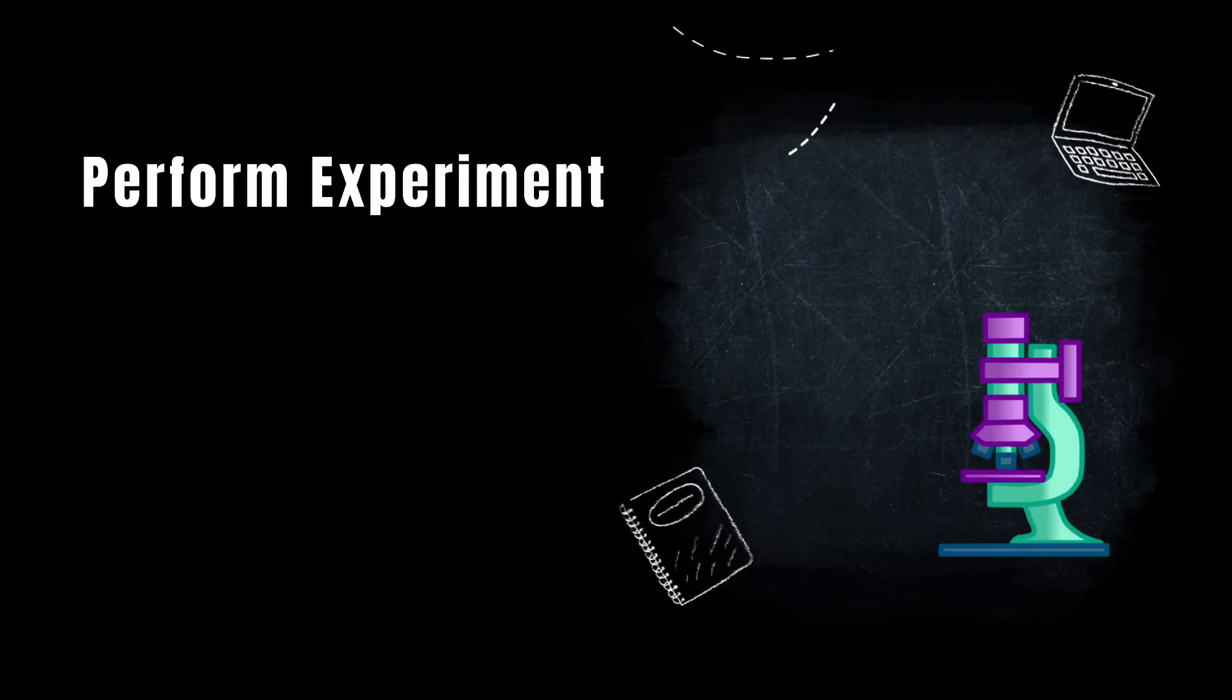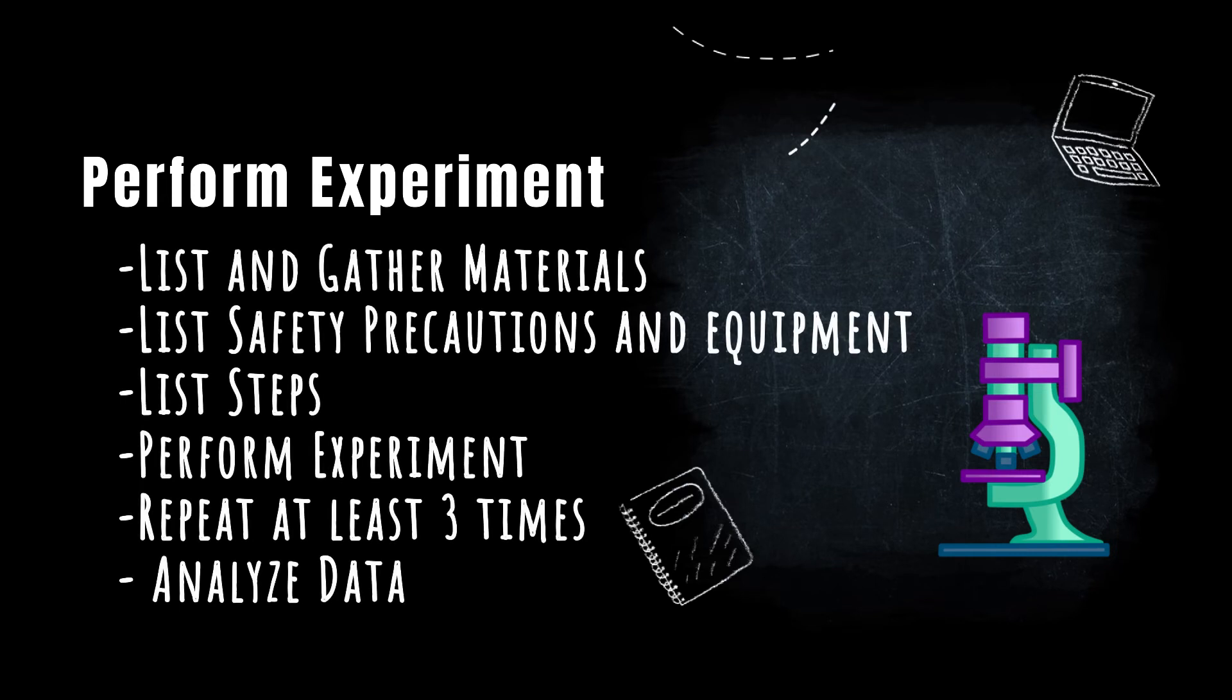After you have come up with your hypothesis, then it is time to experiment. Before you just dive right in, you need to be organized. Start by making a list of all the materials that you will need to do the experiment. Make sure you also list any safety precautions that need to be taken or safety equipment that may be needed, such as lab coat or goggles.